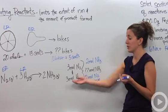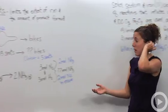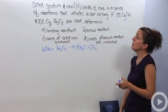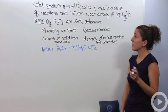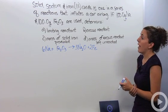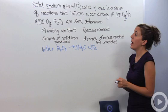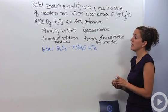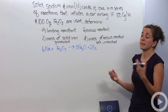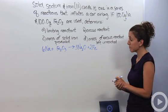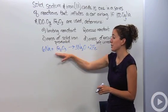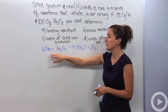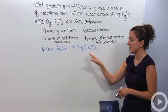Let's do a problem that incorporates all these concepts. Solid sodium and iron(III) oxide is one reaction in a series that inflates a car airbag. If 100 grams of sodium and 100 grams of iron(III) oxide are used, determine: A) the limiting reactant, B) the excess reactant, C) the mass of the product, and D) the mass of the excess reactant left over. The balanced reaction is on the board — it's a single replacement reaction where the metals are swapped.